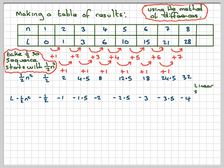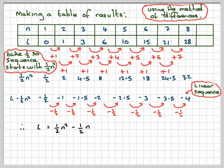Now, this is a linear sequence, what's left here, because all we're doing is we're subtracting a half each time. So, therefore, the sequence is going to be a half N squared minus a half N.